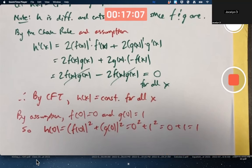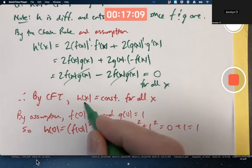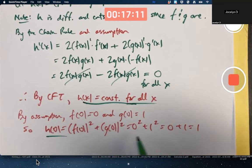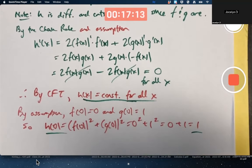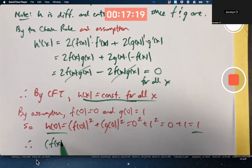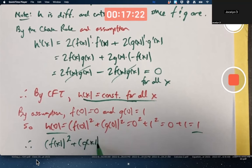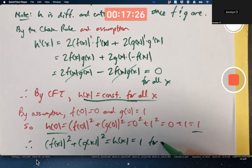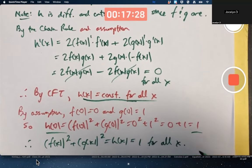But if h of x is constant for all x and h of zero is one, the constant's got to be one. Done. Therefore, f of x squared plus g of x squared equals h of x equals one for all x. Done. Praise the Lord.